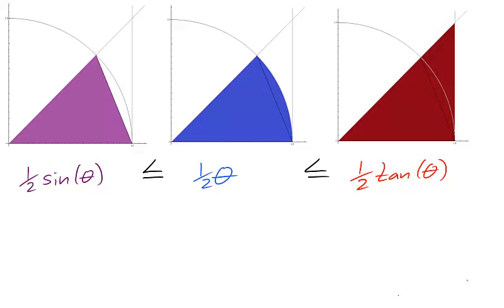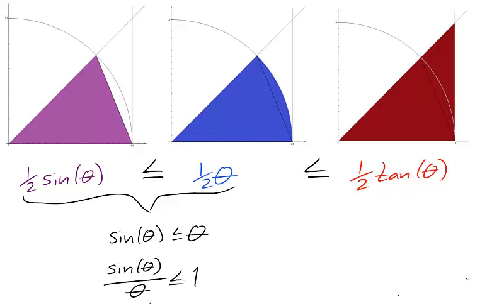So from this circle, we have found three shapes of increasing area. And from these areas, we have found a string of two inequalities. From the first inequality, if we multiply by 2, we have sine theta is less than theta. And since theta was chosen not to be 0, we can divide by theta to find that sine theta over theta is less than or equal to 1.